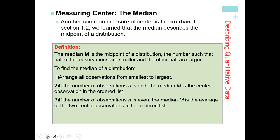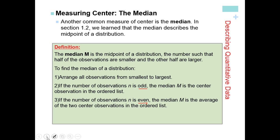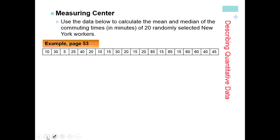Medians are calculated a little differently depending on whether you have an odd or even number of observations. The median is the center observation. If it's odd — for instance, 5 pieces of data — you'll have 2 on one side, 2 on the other, and the median is the 3rd value in the middle. If it's even, you take the 2 middle values and average them to get your median, so the median might not actually be a number that was in your data.